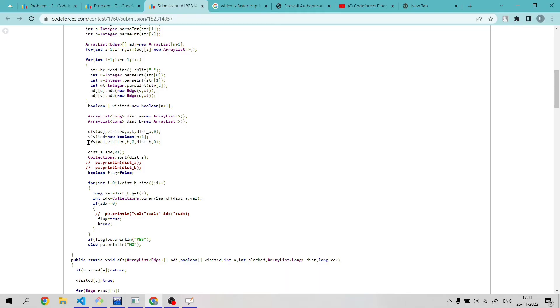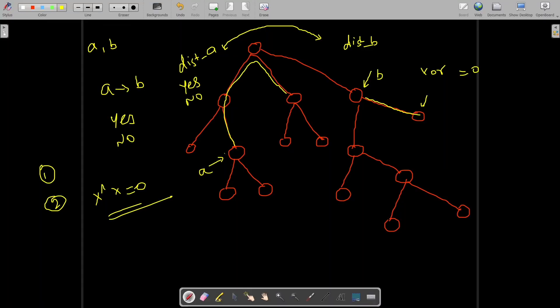After that, you can see that I am calling another DFS from vertex B. And one thing you can notice is that here I am adding 0 in distance A array list.